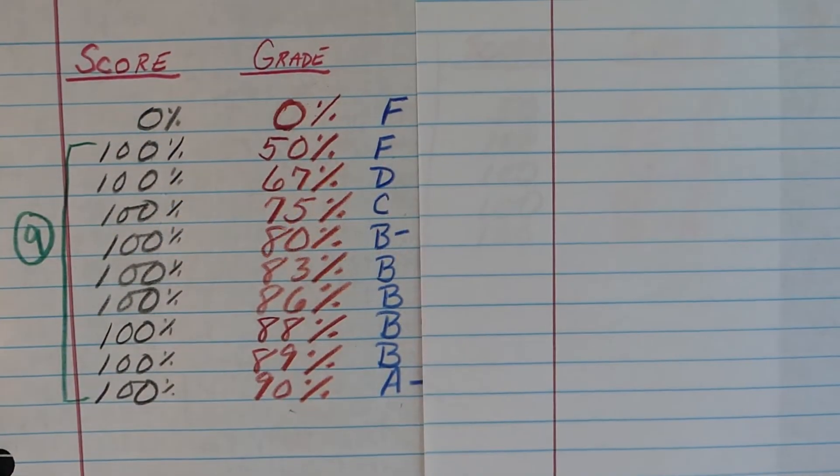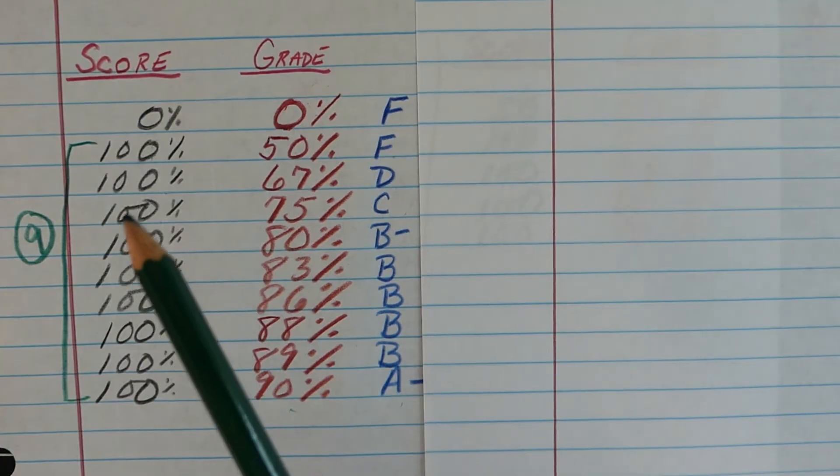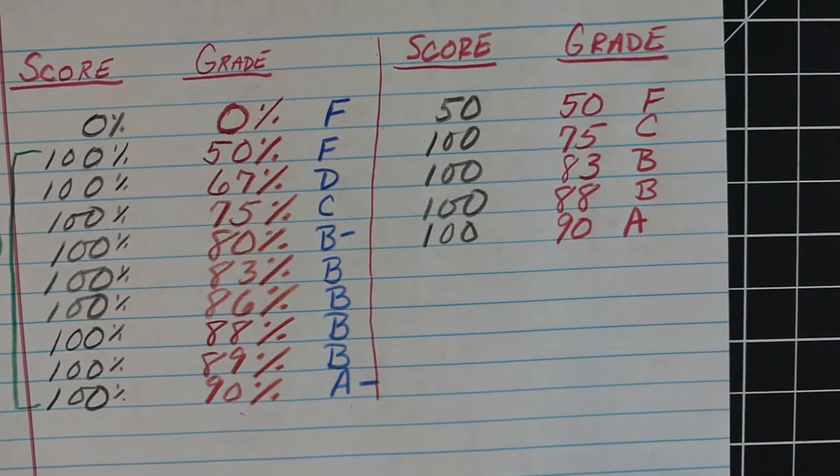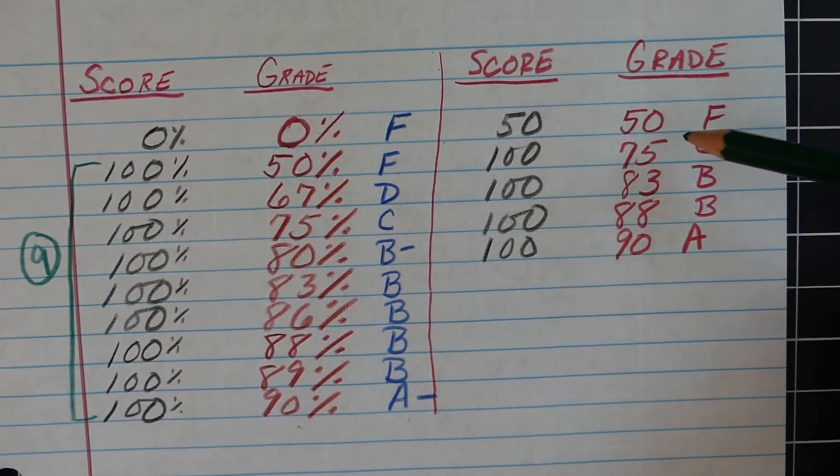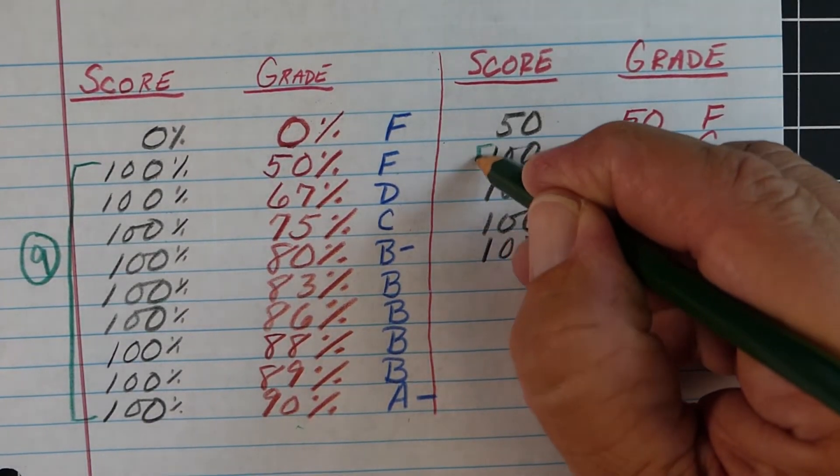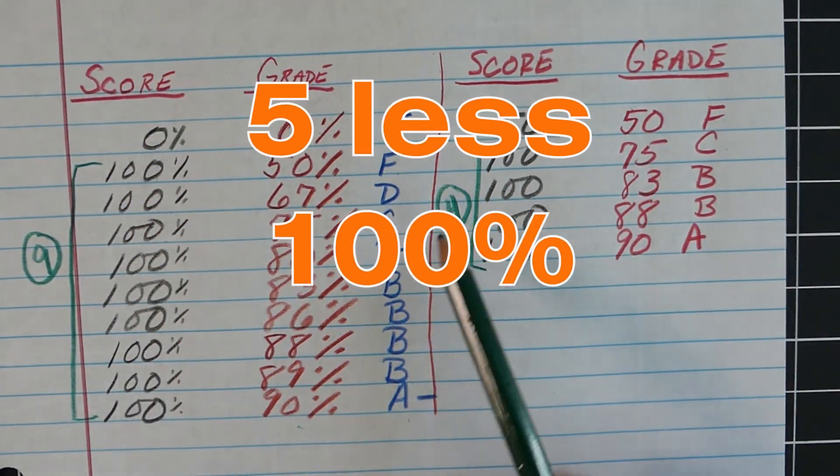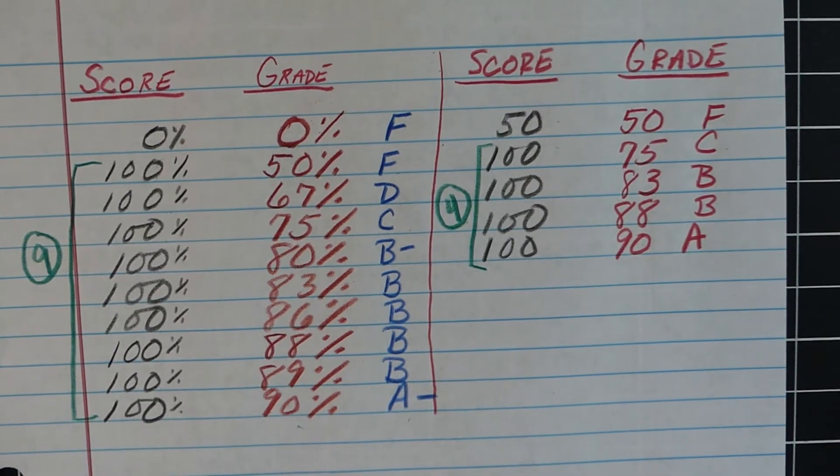Now on the flip side, what if we're getting 100% and our first score was 50% instead of zero? Earlier we showed getting 0% on our first score and how it took nine 100%s just to get it back. If our first grade had been an F but 50%, there's a lot less work. After our first score of 100%, we're already up to a C. As we continue to add 100%, by the second 100% we're up to a B. We only actually need four 100% to get back up to an A, which is five less than if we got a zero on the first one.